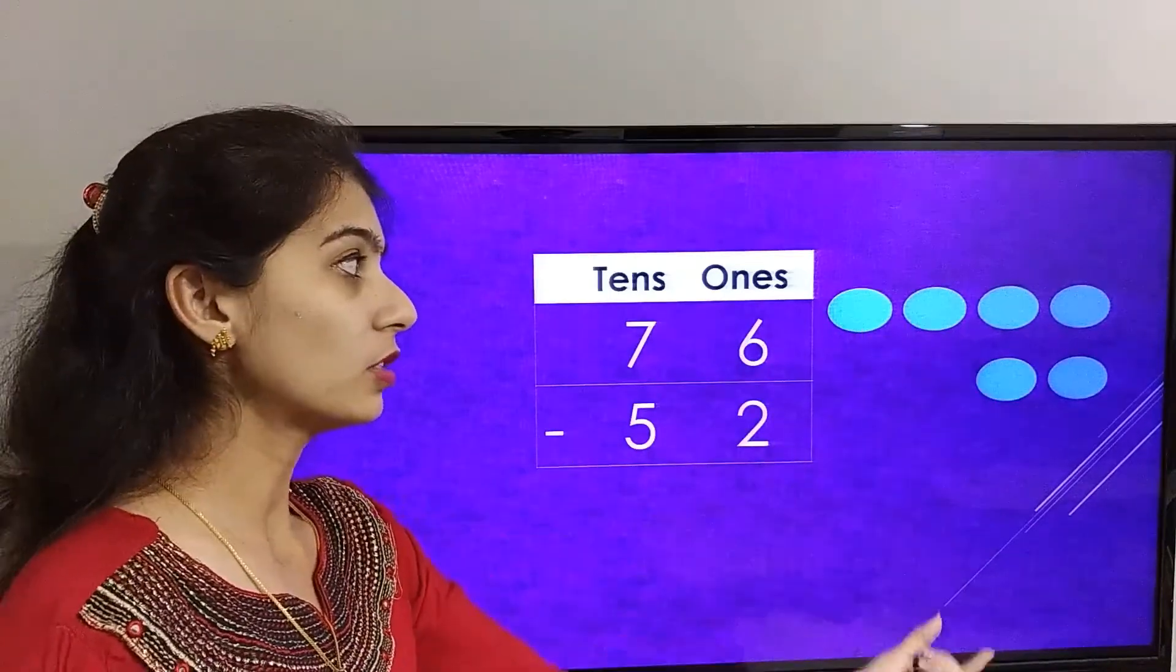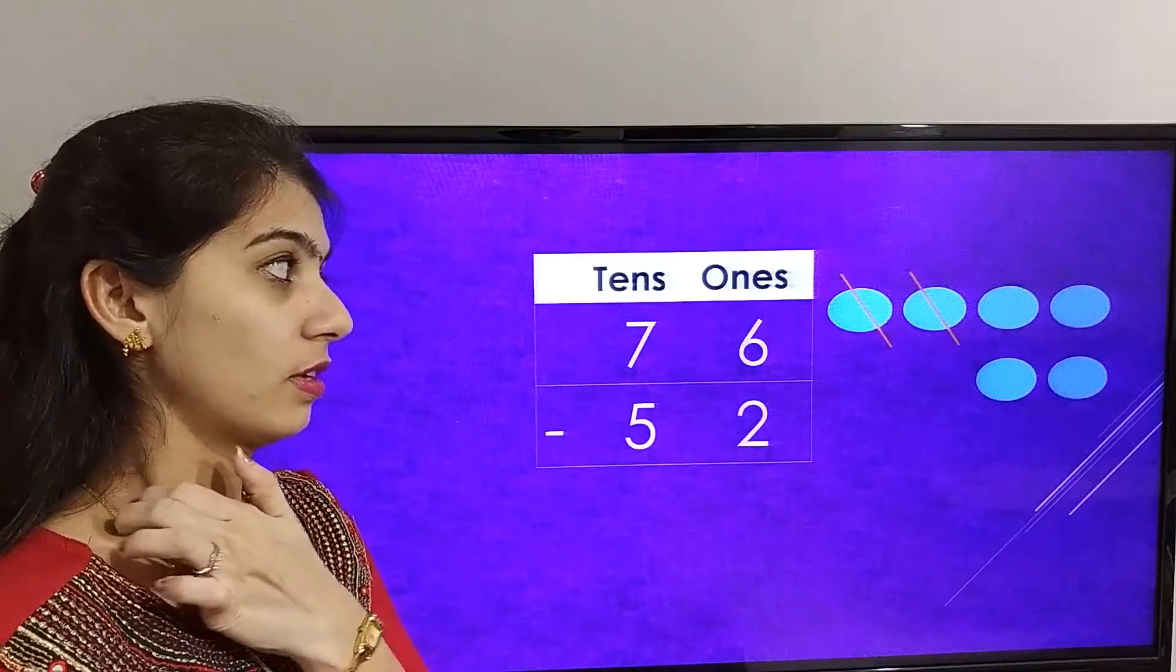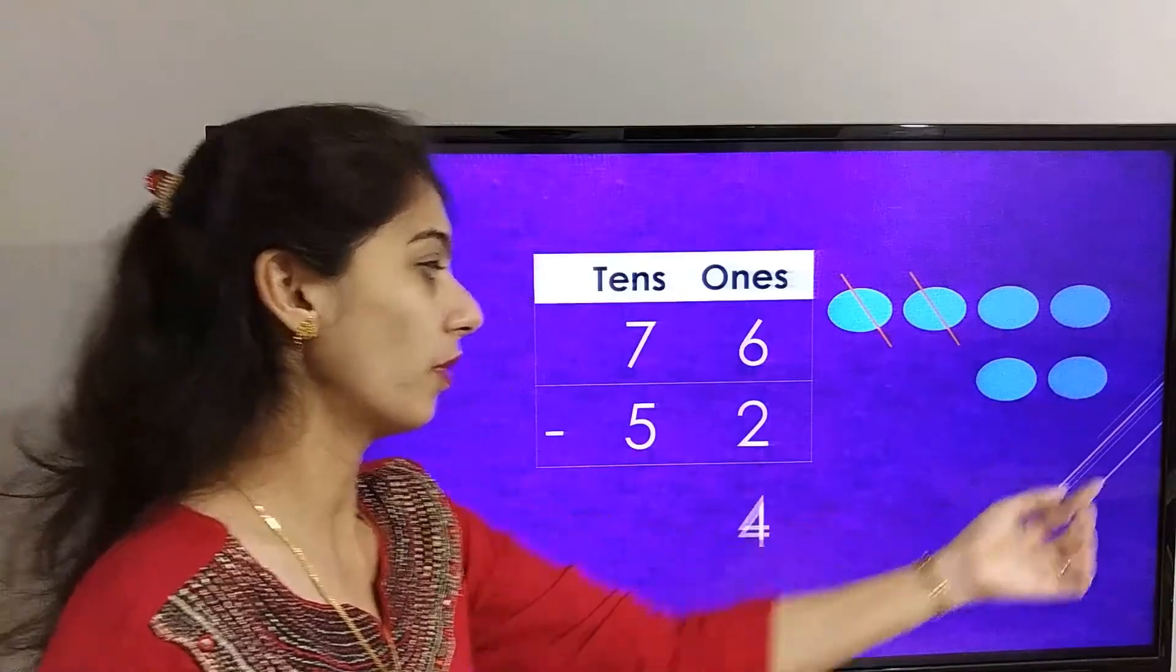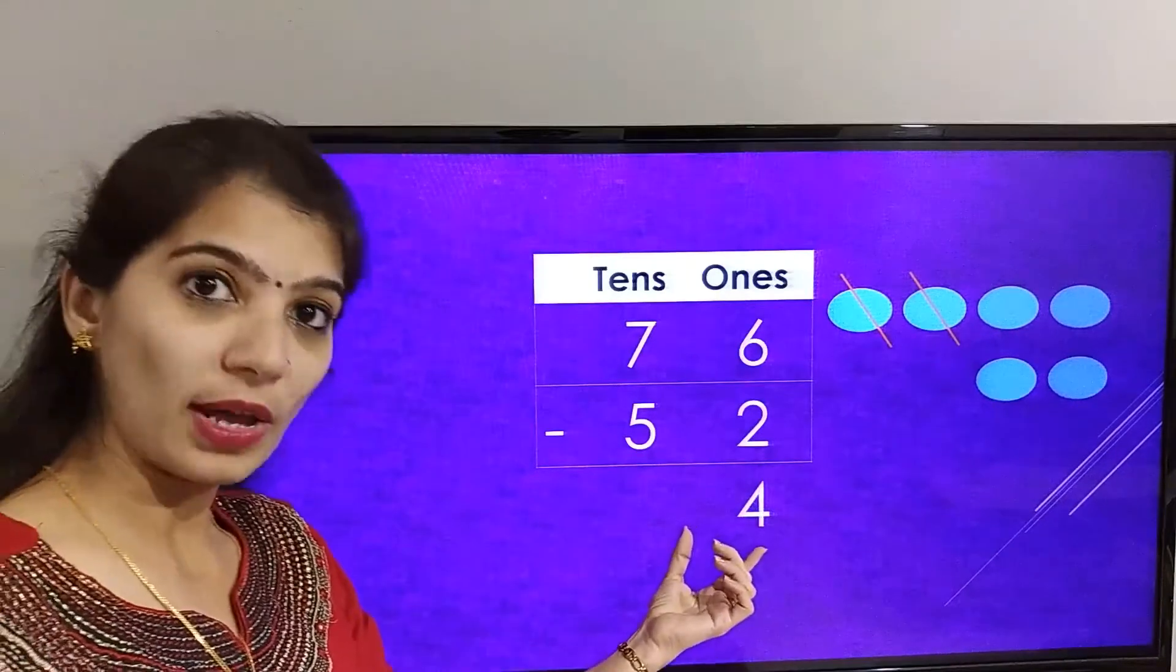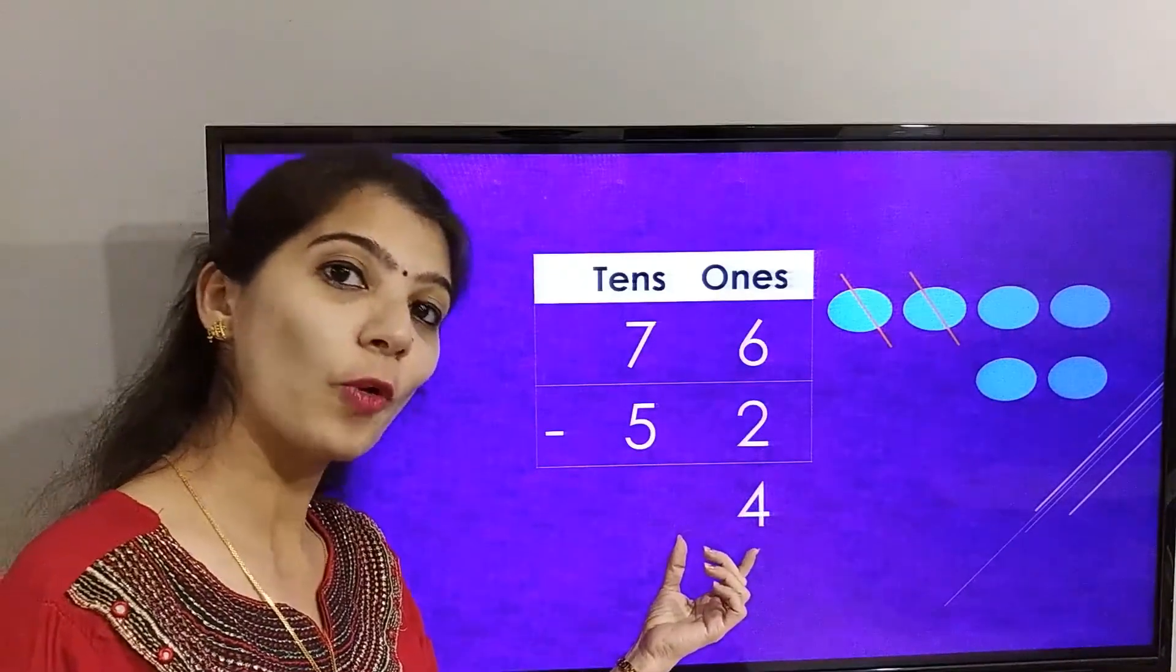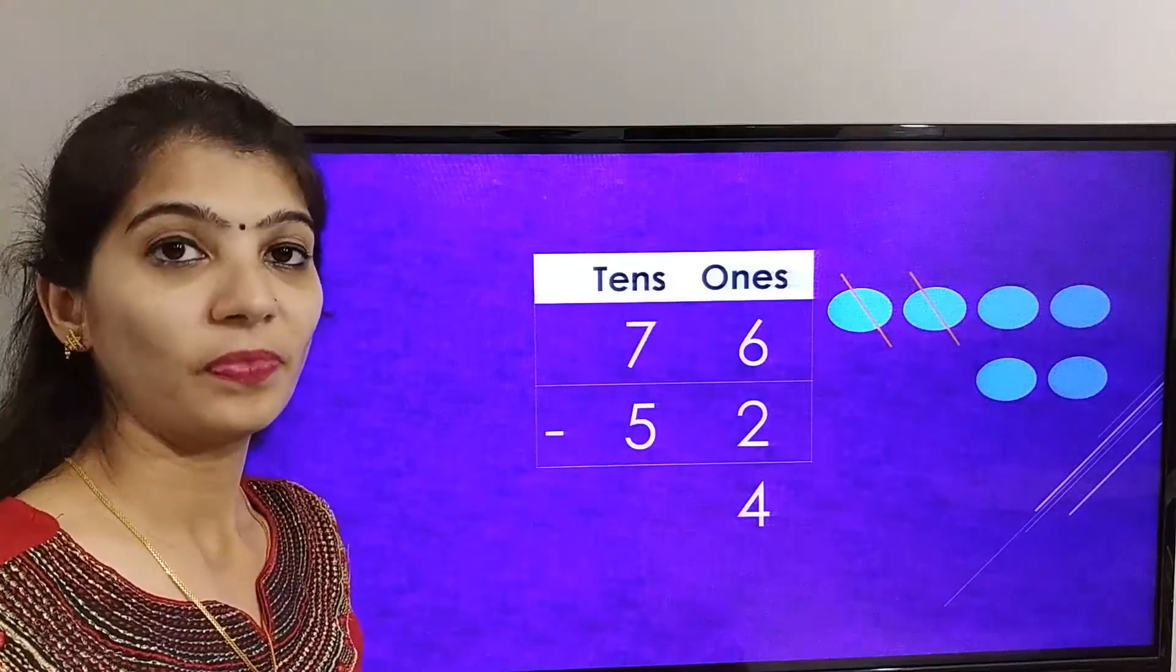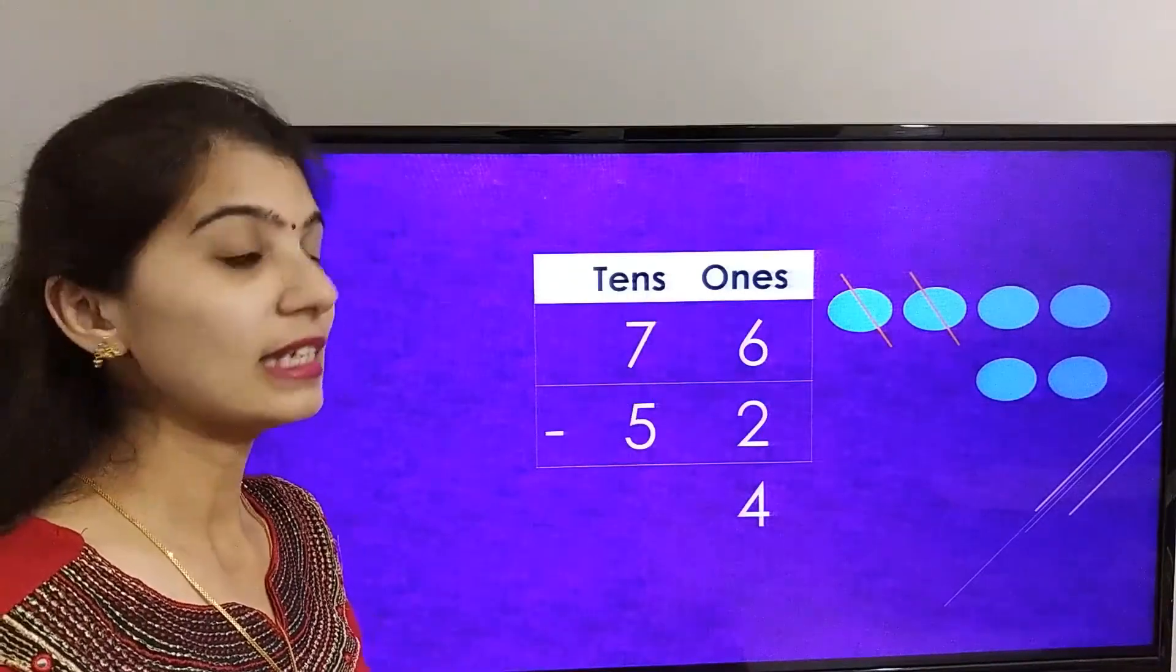Let's cut two balls, so the remaining balls are 1, 2, 3, 4. So the answer in the ones place is 4. Now let's solve the tens place.